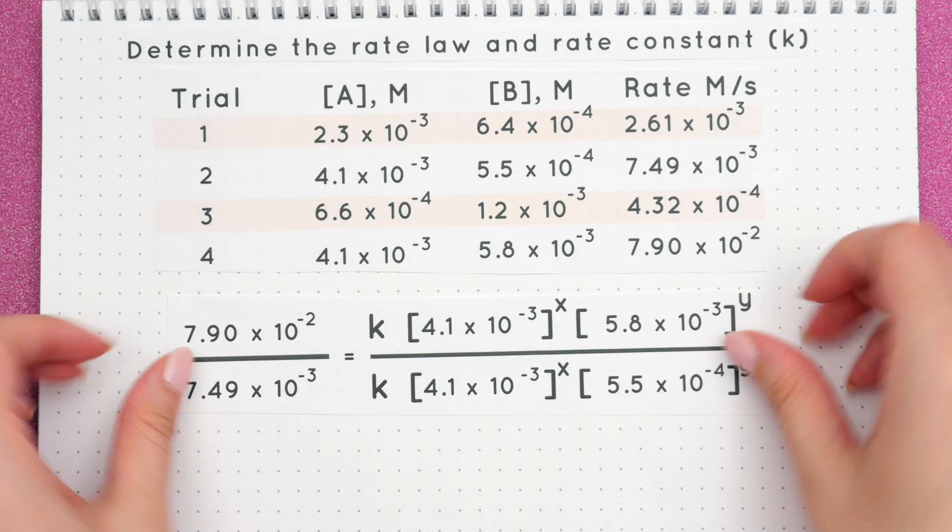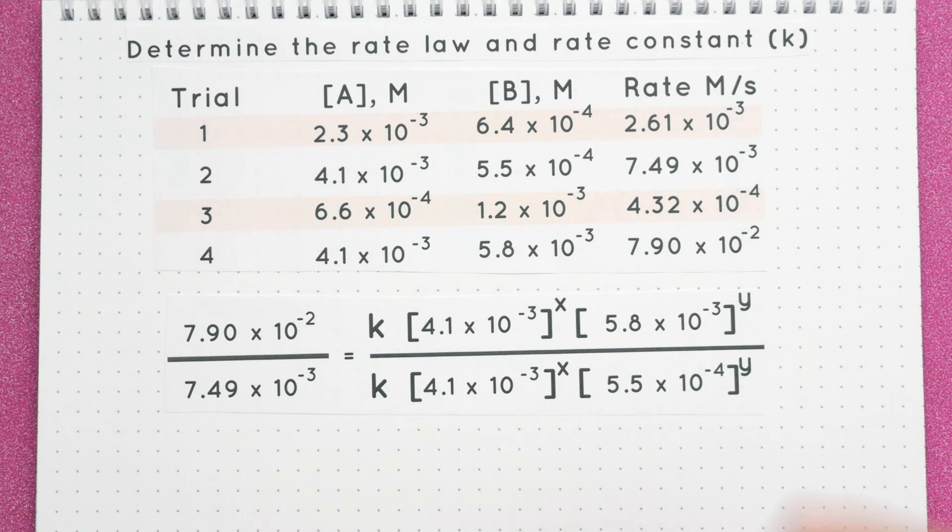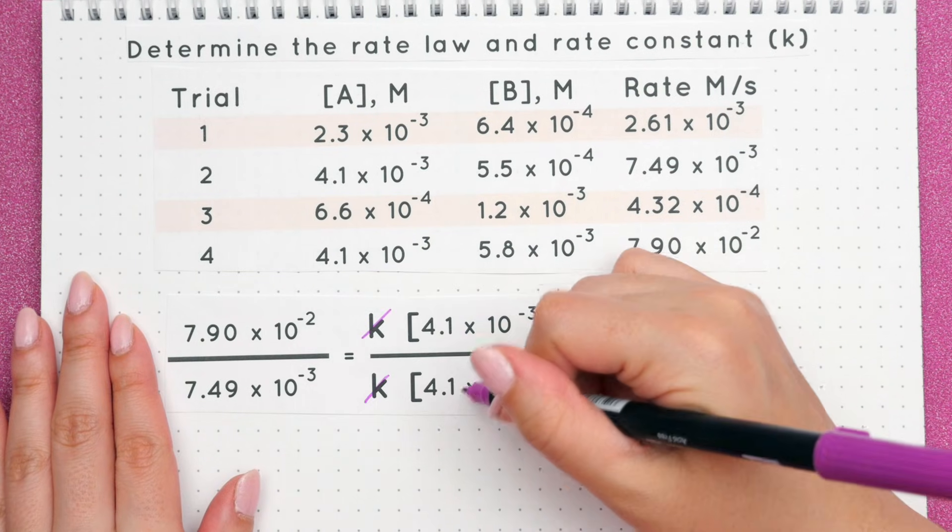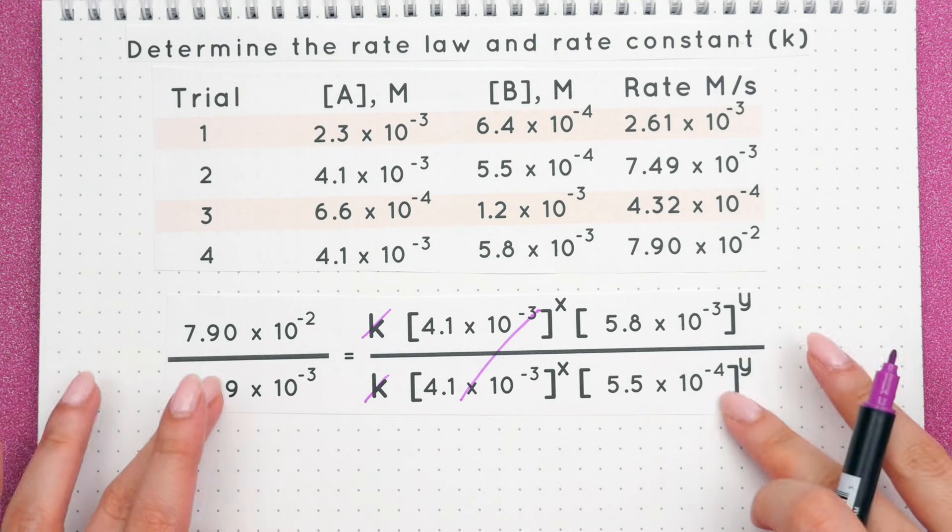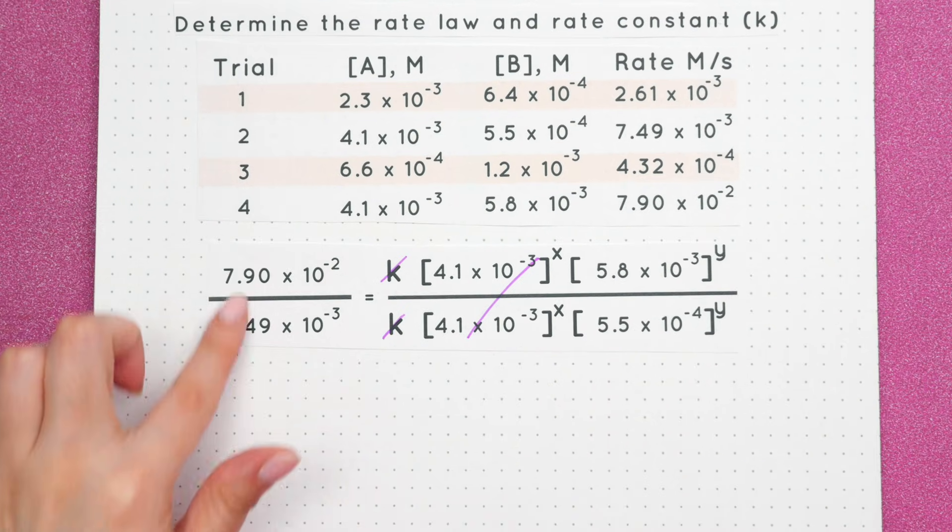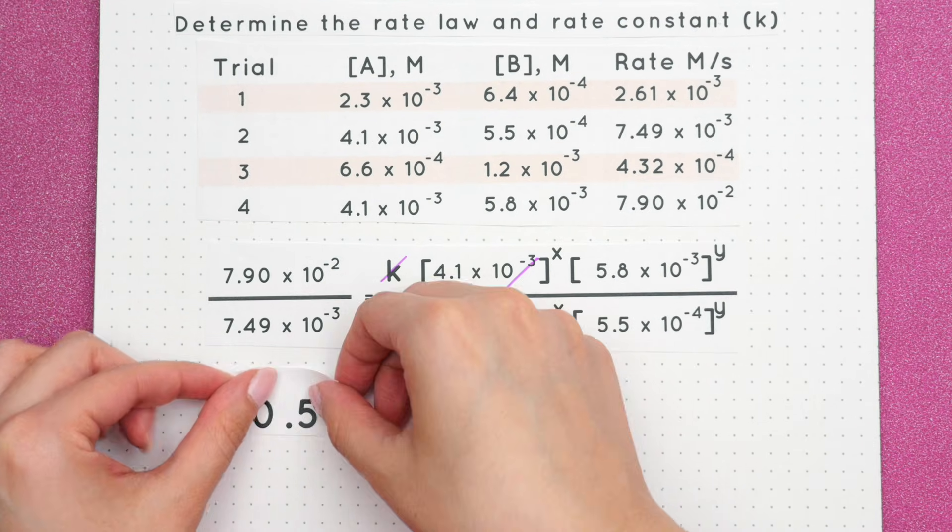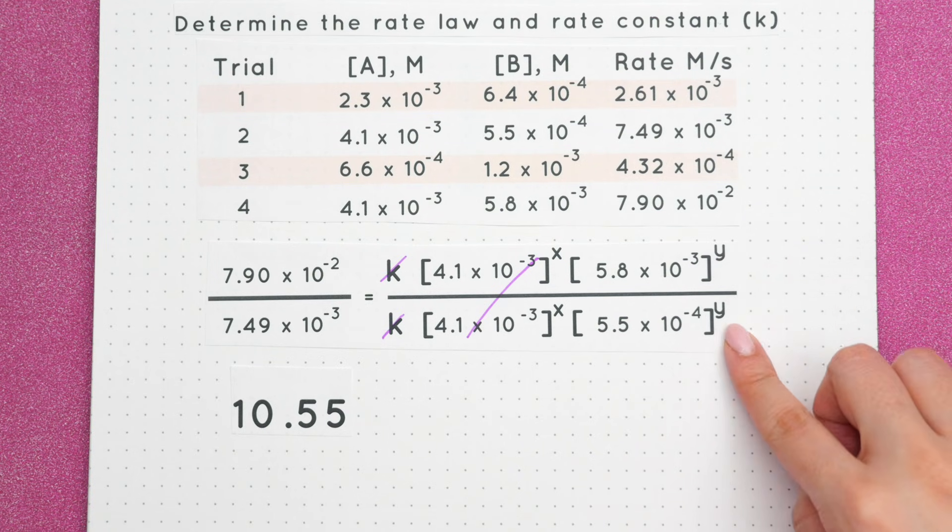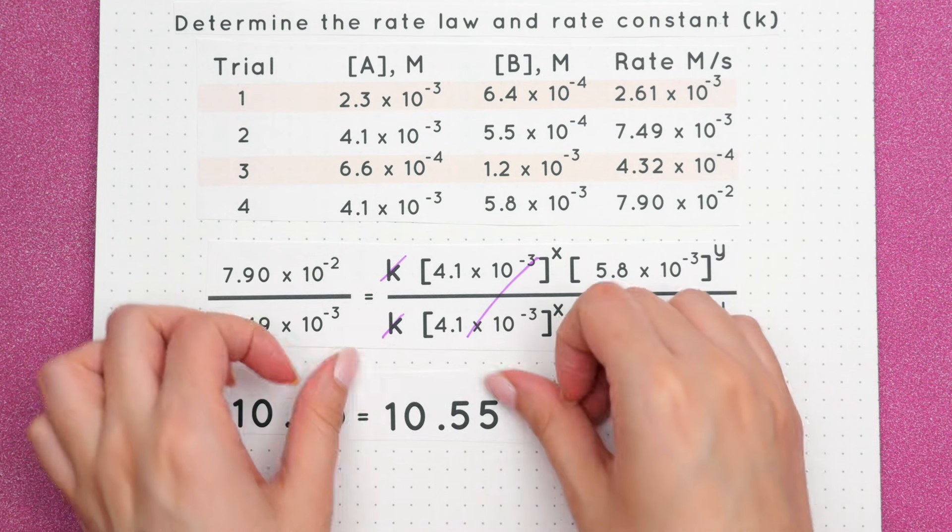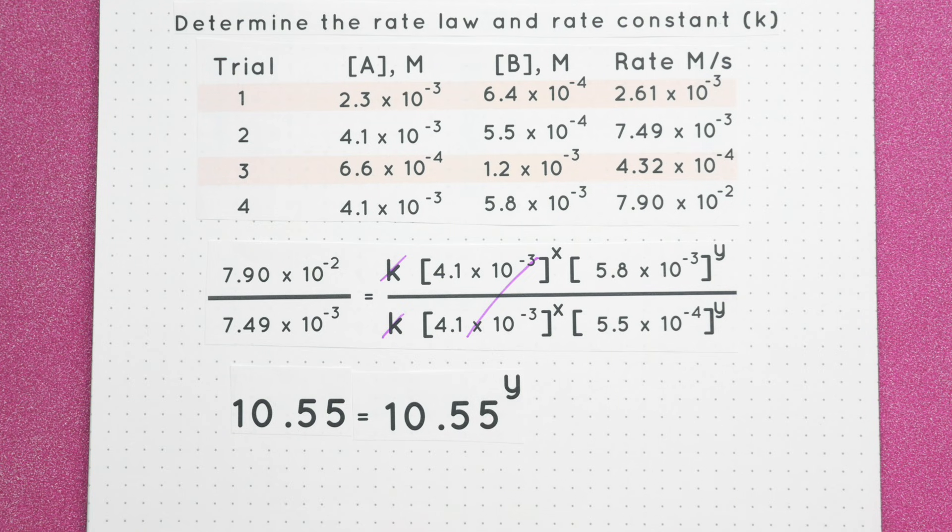Plug everything in for trial 4 and trial 2. Now let's cancel out any like terms and divide the remaining terms. Dividing the left side gives us 10.55 and dividing the right side also gives us 10.55 just with an exponent of y. y is then equal to 1.